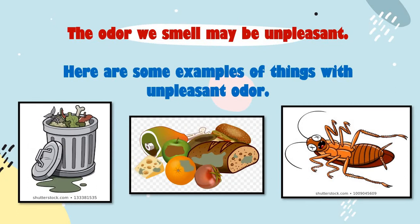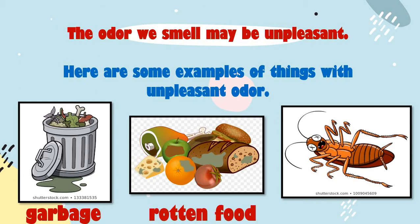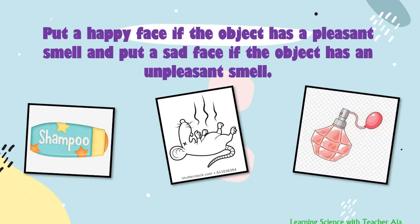The odor we smell may be unpleasant. Here are some examples of things with unpleasant odor. The first one is garbage. The second one is rotten food. And the third one is cockroach. Put a happy face if the object has a pleasant smell, and put a sad face if the object has an unpleasant smell.